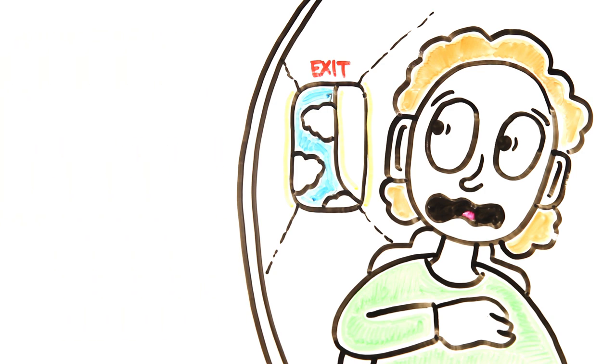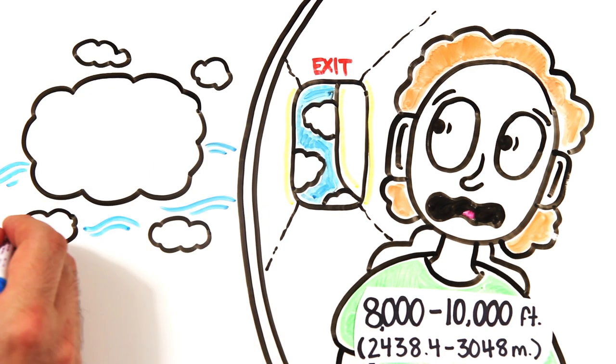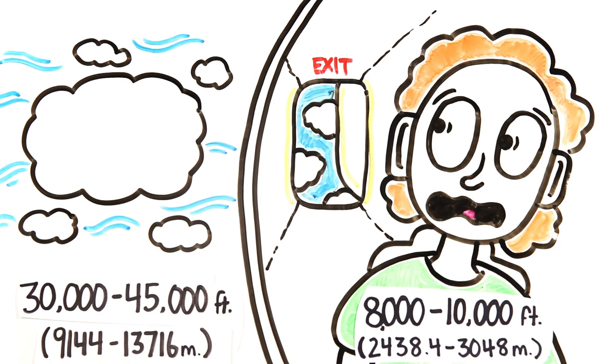Commercial airplanes pressurize their cabins to match the atmospheric pressure of 8,000 to 10,000 feet above sea level, even though the cruising altitude of the plane you're in is 30,000 to 45,000 feet in the air.